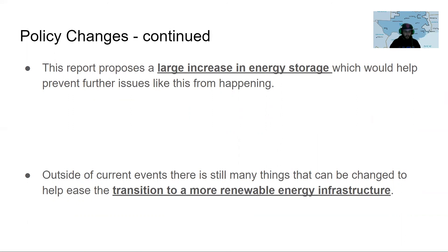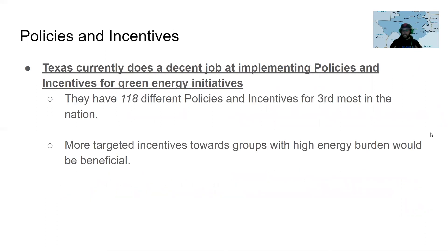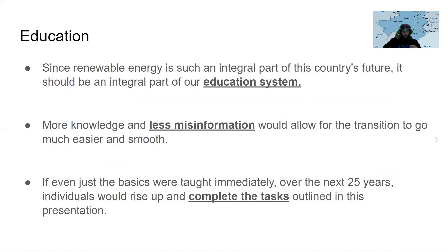Storing solar energy during the summer, when it's more abundant, would allow it to be utilized in a pinch if a similar situation arises. Texas currently does a pretty good job implementing policies and incentives for green energy, with about 118 different policies and incentives — the third most of any state — but more targeted incentives towards groups with high energy burden would be beneficial. Rather than individual incentives that only those who can afford to install technology can take advantage of, more community power should be emphasized so the individual isn't paying the brunt of the bill. Since renewable energy is such an integral part of our country's future, it should also be an integral part of our education system — more knowledge and less misinformation would allow the transition to go much more smoothly, and individuals educated over the next 25 years would rise up to complete the tasks outlined in this presentation.